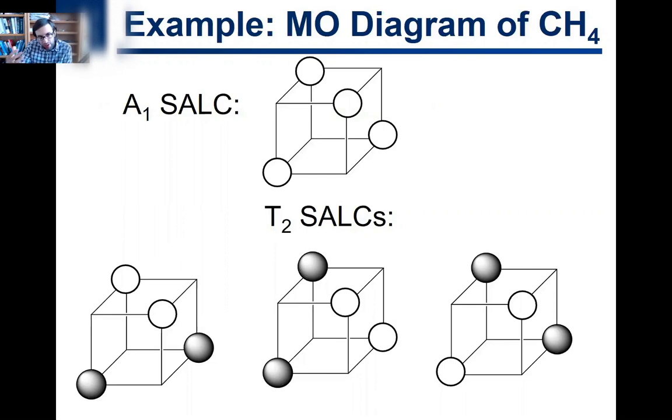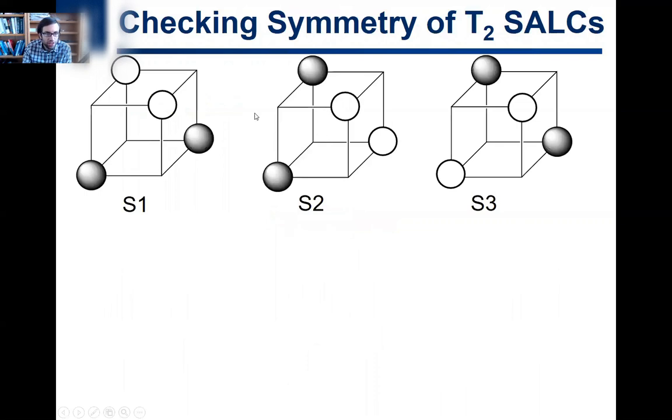But for now, I'm just giving you the answer that the T₂ SALCs look like that. What I want us to do instead is just check this answer and show to ourselves why these three SALCs are triply degenerate and why they transform together as T₂ symmetry. So let's try to do that. I've drawn this cube here. Obviously we're in tetrahedral symmetry, and this cube sets up four points of the tetrahedron and helps us visualize this.